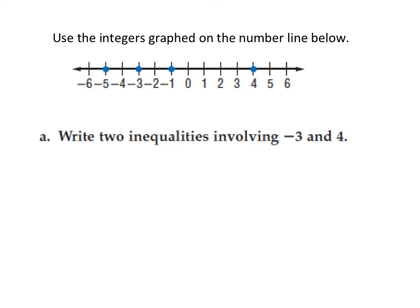Using this number line, we're going to solve problem A: write two inequalities involving negative 3 and 4. We notice that negative 3 is on the left side of 0, and 4 is on the right side. All numbers to the left of 0 are negative, and negative numbers in nature are less than 4. So negative 3 is less than 4.